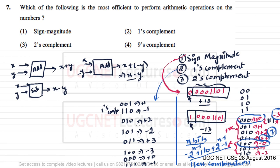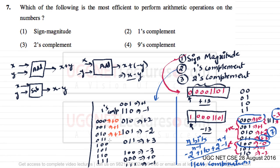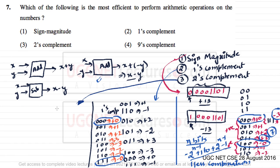Looking at the 3-bit one's complement table: 000, 001, 010, 011 represent +0, +1, +2, +3 and 100, 101, 110, 111 represent -3, -2, -1, -0. You can see it is a mirror image. But here in one's complement we are still wasting one combination to represent both +0 and -0, which is the same problem as sign-magnitude.